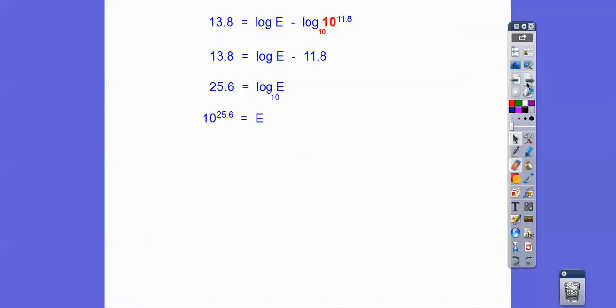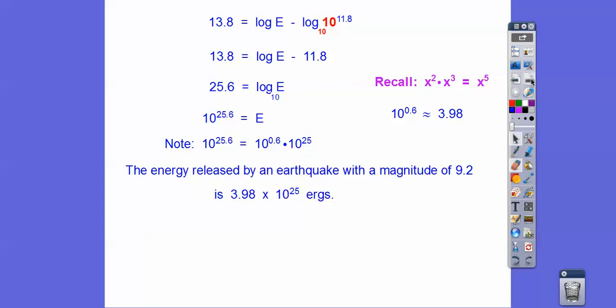If you punched in 10 to the 25.6 power, that's a huge number, so big your calculator has a hard time recognizing it. When we multiply x squared times x cubed, we just add those exponents. So this 10 to the 25.6 is 10 to the 25 times 10 to the 0.6. I'm going to put this in scientific notation and our calculator will hold this number. Punch in 10 to the 0.6 and we get 3.98. So this is 3.98 times 10 to the 25th. The energy released by an earthquake with a magnitude of 9.2 is 3.98 times 10 to the 25th ergs.